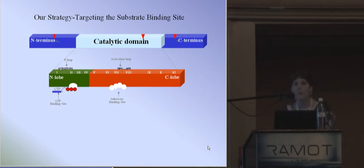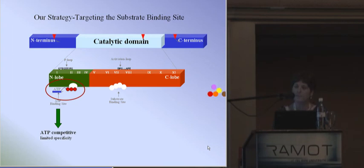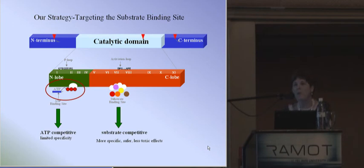What you see here is a schematic presentation of a protein kinase. Most protein kinase inhibitors developed so far are ATP-competitive inhibitors, and they have a severe problem with specificity because this region is highly conserved among protein kinases. Our approach is to target the substrate-binding site, developing substrate-competitive inhibitors, which we rationalize will be more specific, will have fewer side effects, and therefore will be safer and better suited for clinical applications.